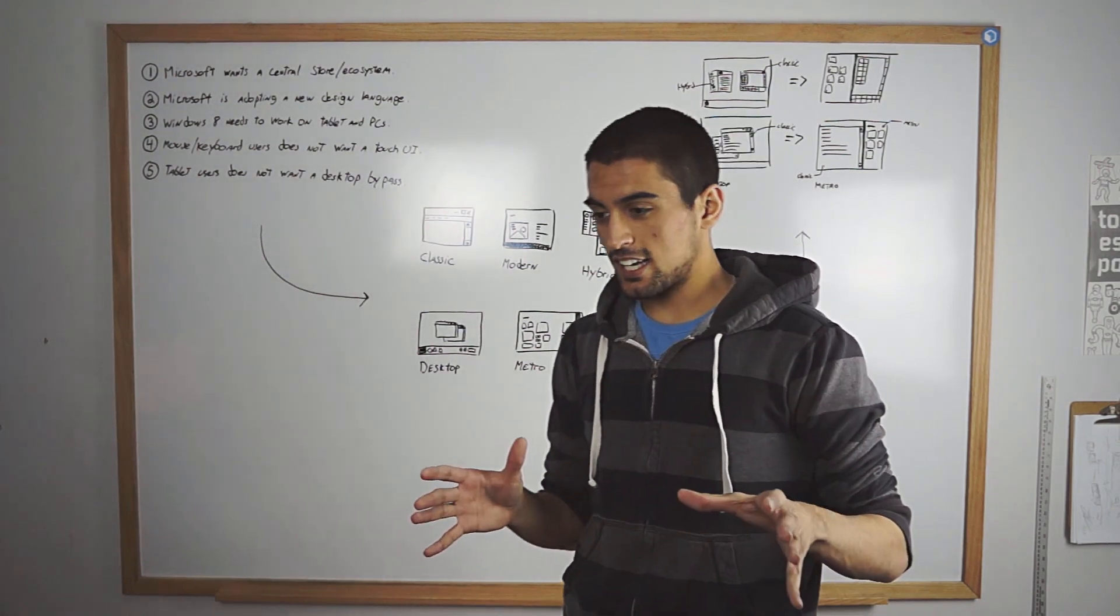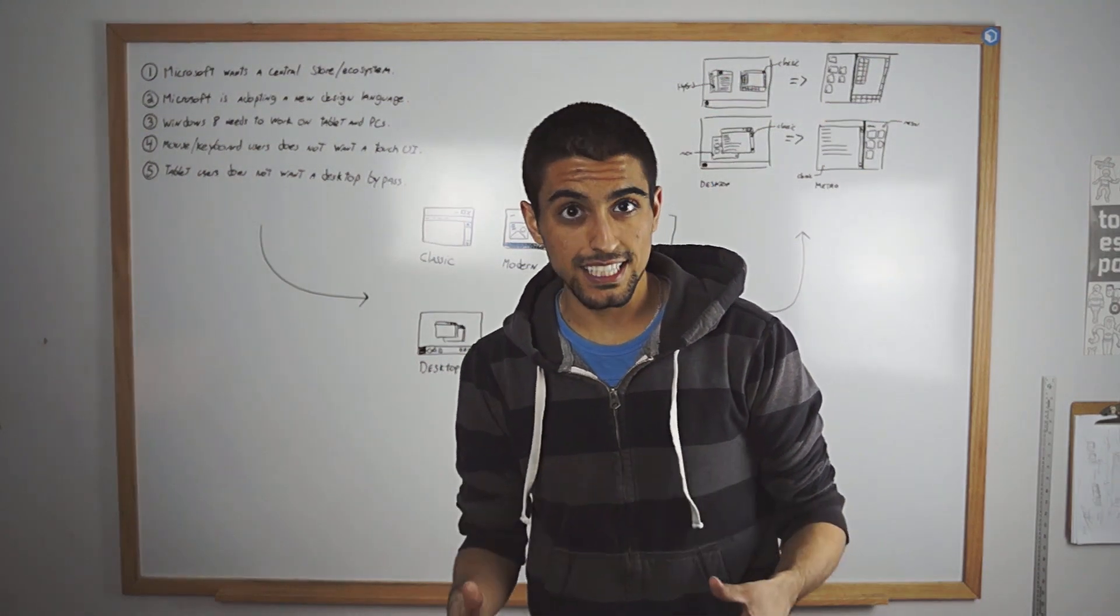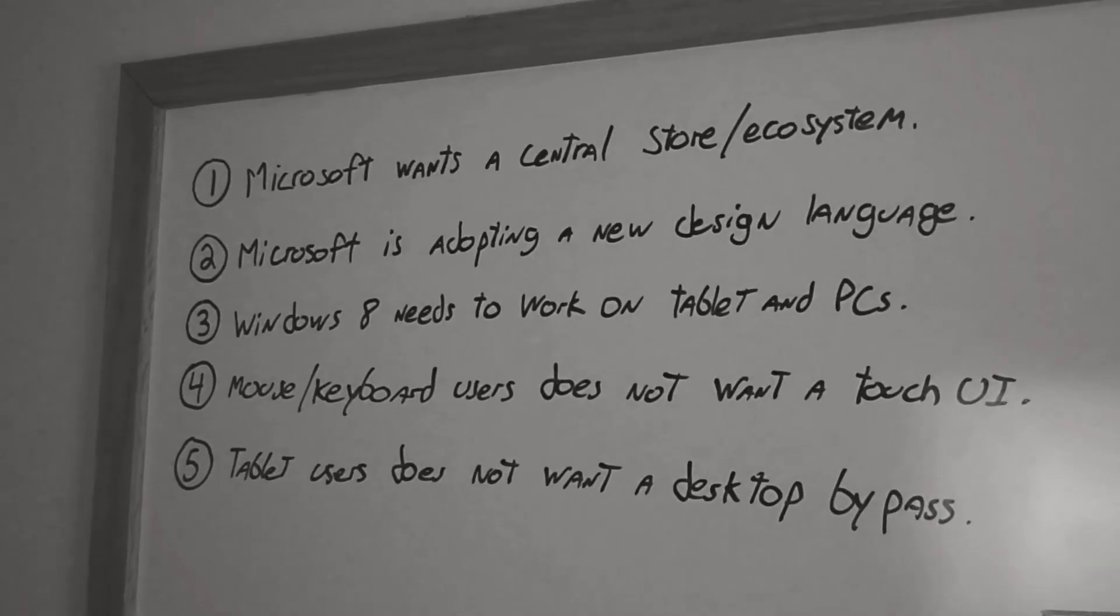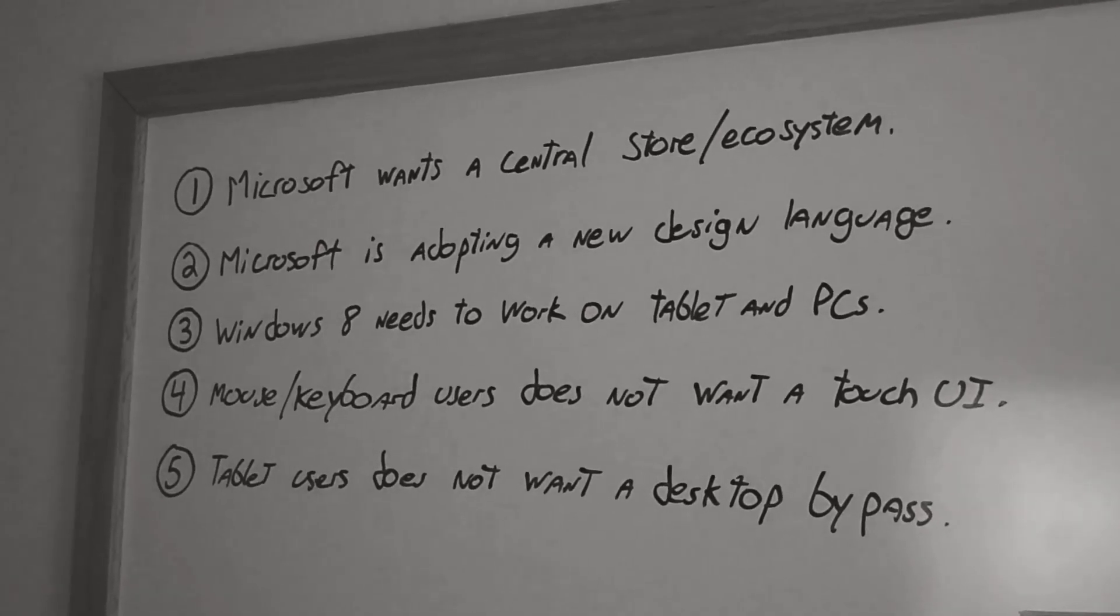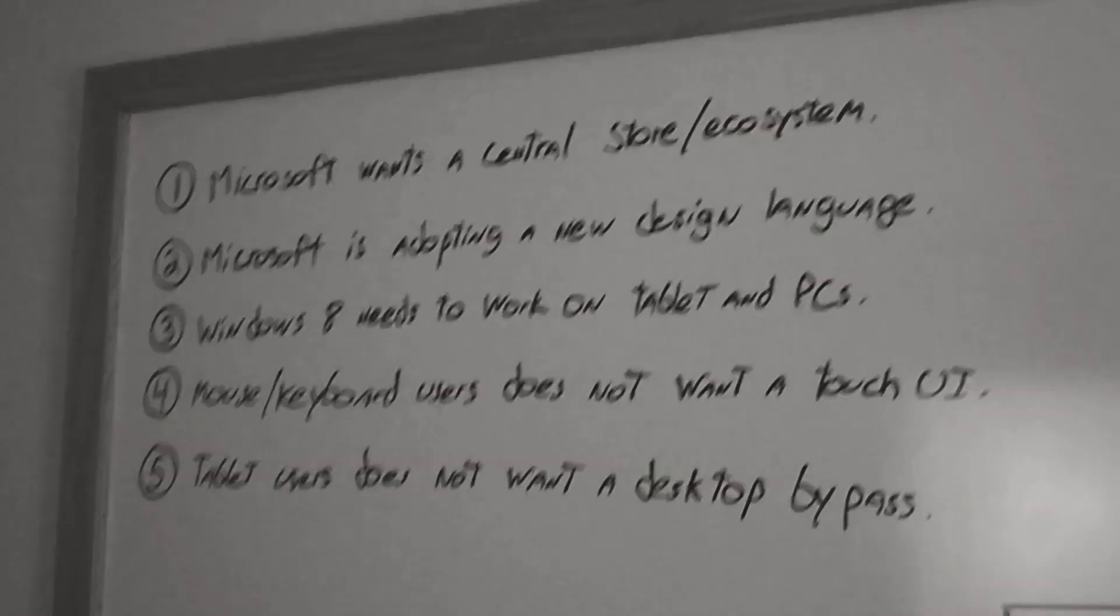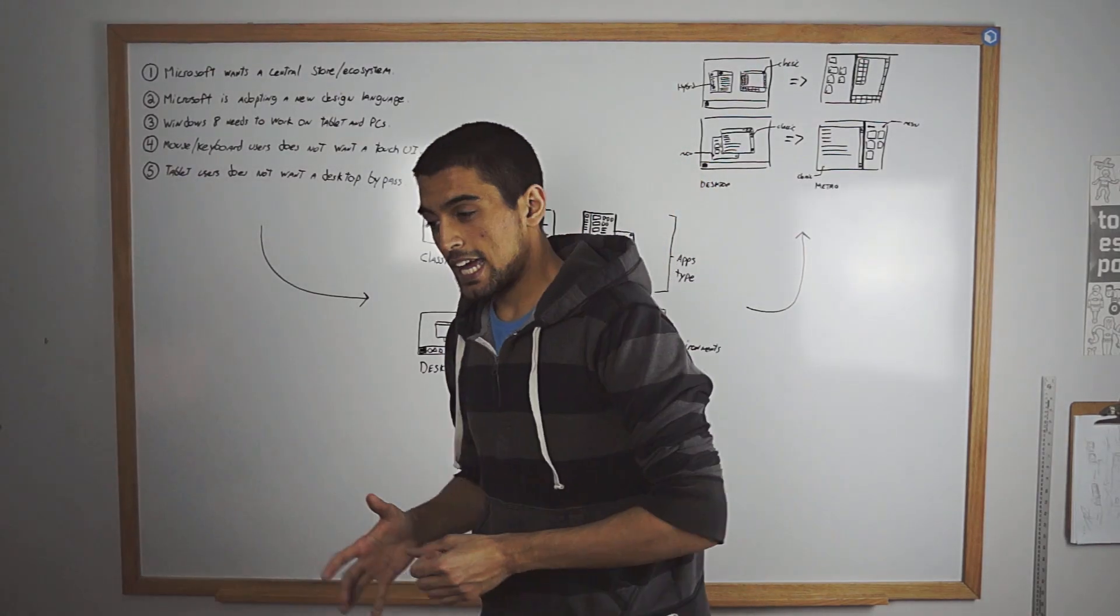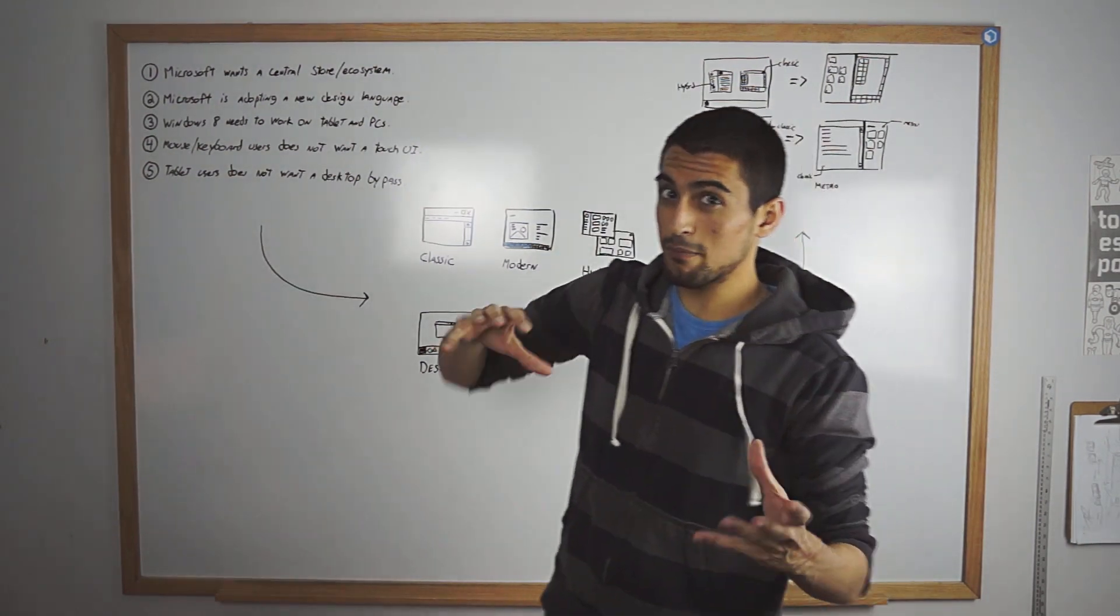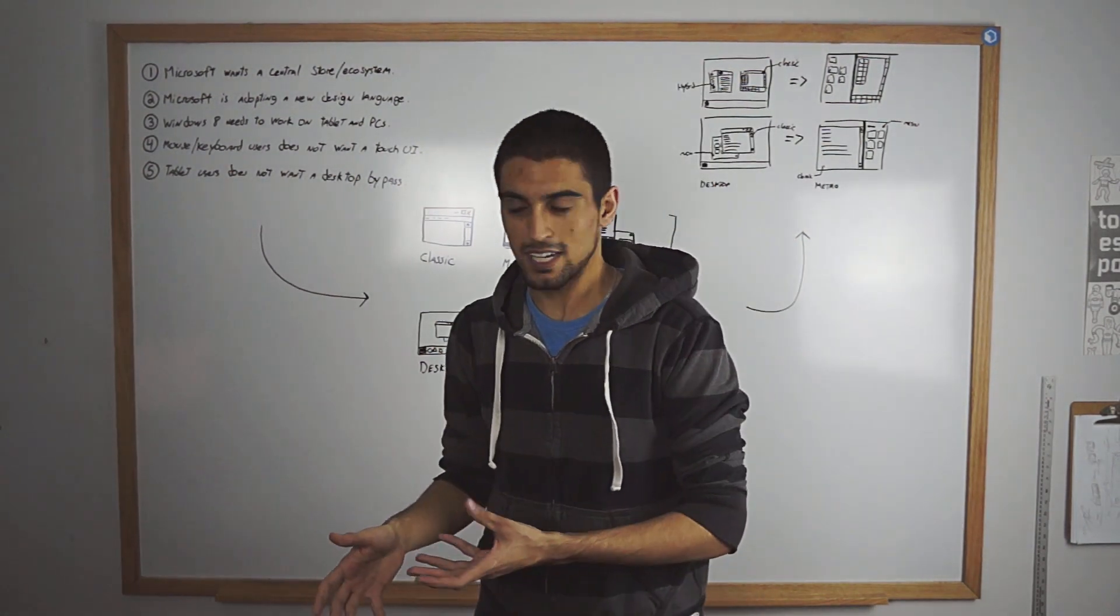When fixing Windows 8, you first need to understand what Windows 8 is and what is the problem. From there, I created five laws that should bring some ideas about where Windows 8 should be, how it should look and what do users think about it in general. It needs to follow Microsoft's interests but all of the users' feedback at the same time.